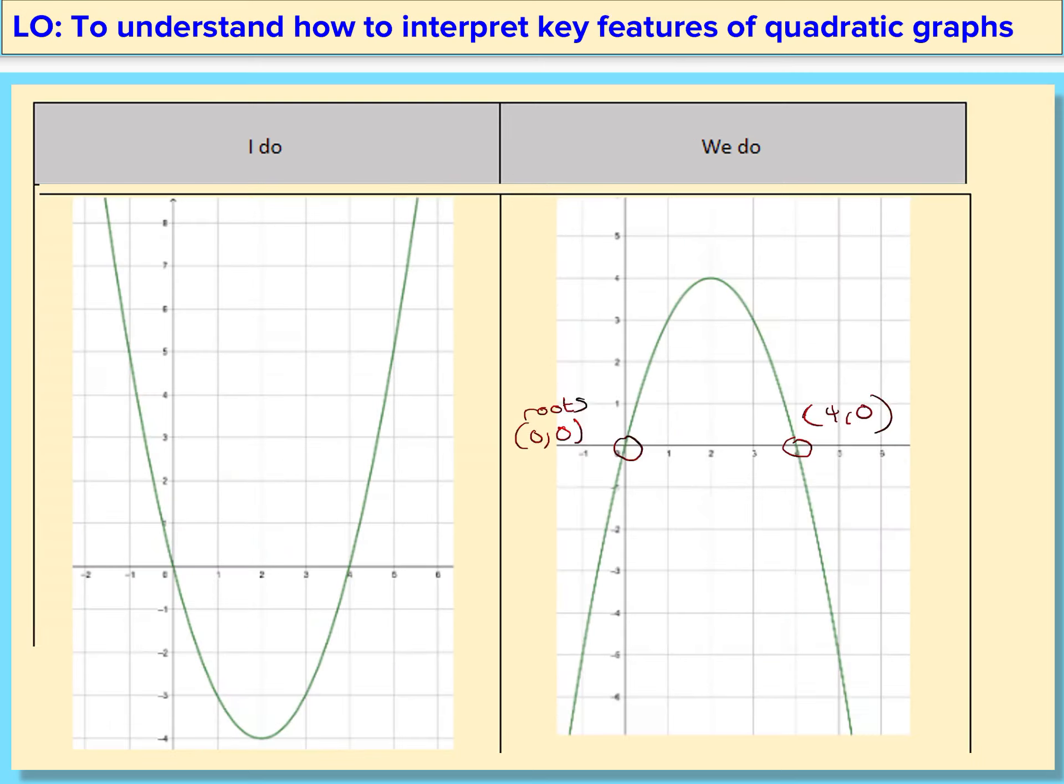Pause this video and have a go at doing the WeDo. Copy the diagram down and just label the graph. Great job, well done. The roots are 4, 0 and 8, 0.